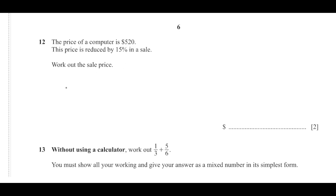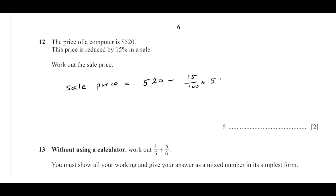The sale price is equal to $520 minus 15% of 520. You can also write this as: if you remove 15% from 100%, the remaining percentage is 85%, so that gives us 85 upon 100.